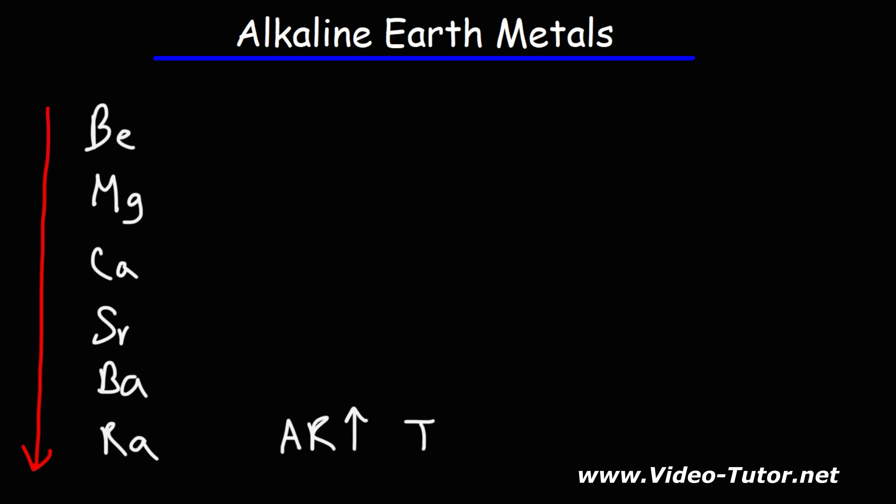The ionization energy decreases as you go down the group. It's easier for the heavier metals to give away their electrons because those outermost electrons are so far away from the nucleus, and the nucleus doesn't hold those outermost electrons as tightly as it would with a small atom like beryllium. So barium, for instance, has a lower ionization energy than magnesium. It takes less energy to remove an electron from barium than magnesium.